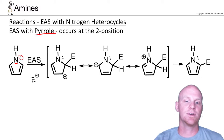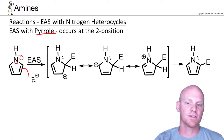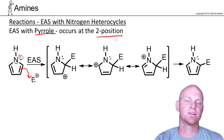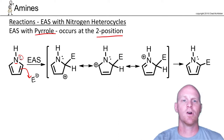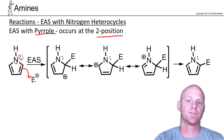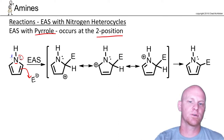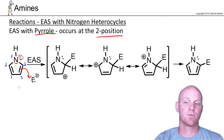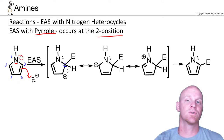When you do an EAS reaction on pyrrole, it's going to happen at the two position. The nitrogen in your heterocycle is always given position one. The adjacent carbons are position two, and the next ones down the chain are position three. So the reaction happens at position two.